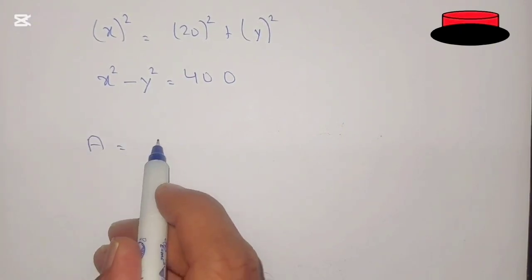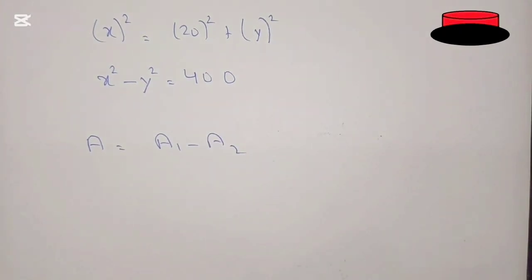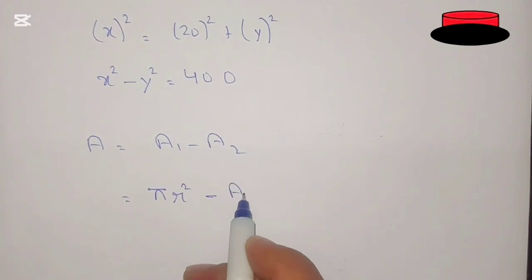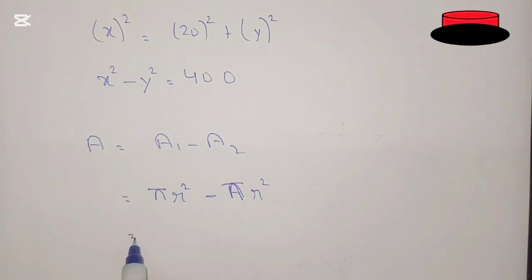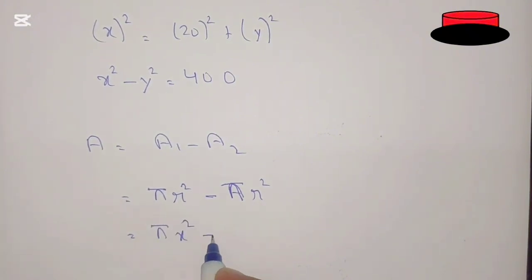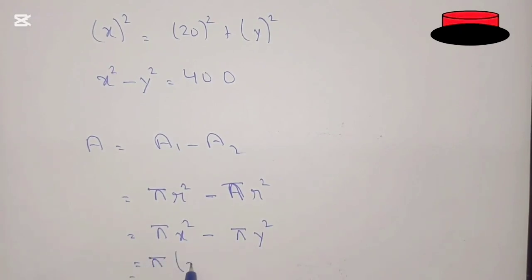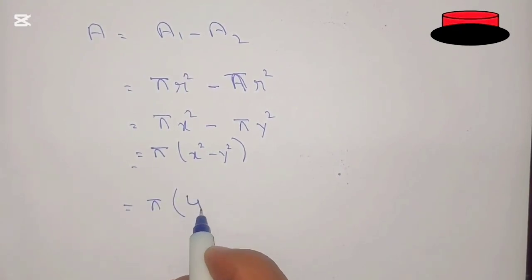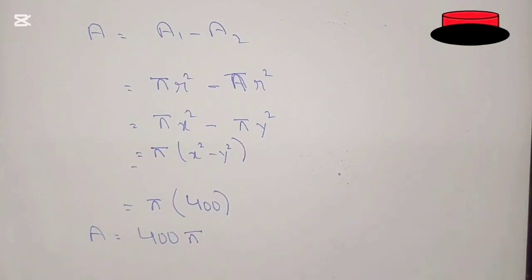Using the Pythagorean theorem for a right angle triangle: hypotenuse squared equals perpendicular squared plus base squared, so we get x squared minus y squared equals 400. For the shaded area: A = π(x²) − π(y²) = π(x² − y²). Since x² − y² = 400, the area equals 400π. So the area of the shaded region between the two circles is 400π.